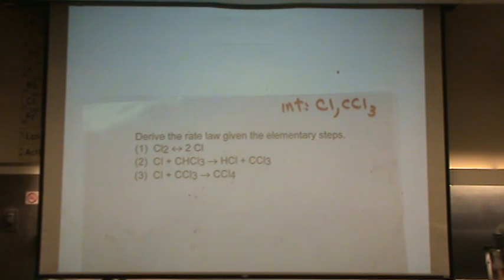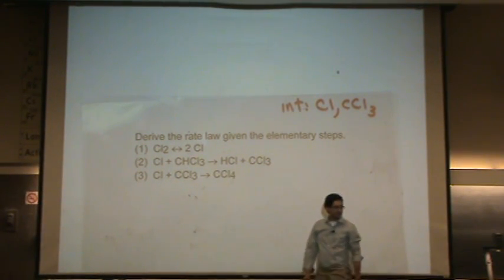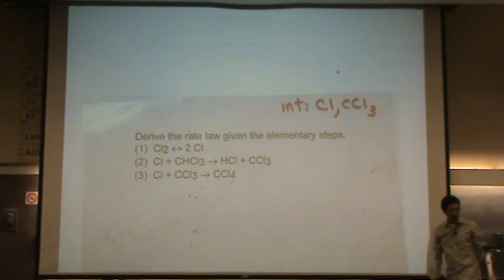I'm going to use three. And the reason is that produces my main product. So this one produces an intermediate. One and two both produce an intermediate. CCL4, carbon tetrachloride, is not one of my intermediates. So I'm going to use rate three.